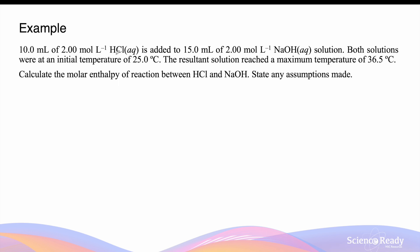10 milliliters of 2 mol/L hydrochloric acid is added to 15 milliliters of 2 mol/L sodium hydroxide solution. Both solutions were at an initial temperature of 25°C, and the resulting solution reached a maximum temperature of 36.5°C. We will calculate the molar enthalpy of reaction between hydrochloric acid and sodium hydroxide — that is, the enthalpy of neutralization — and state any assumptions made. First, let's write a balanced chemical equation: HCl + NaOH → NaCl + H₂O.